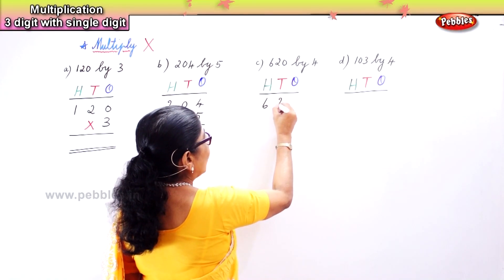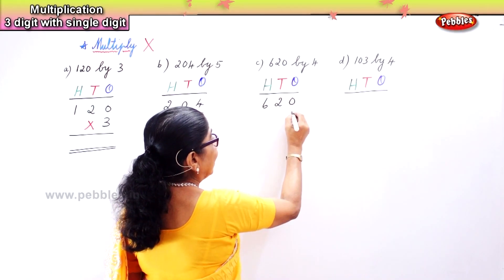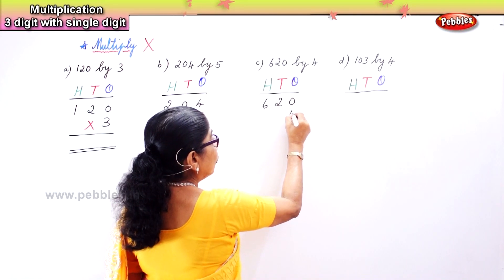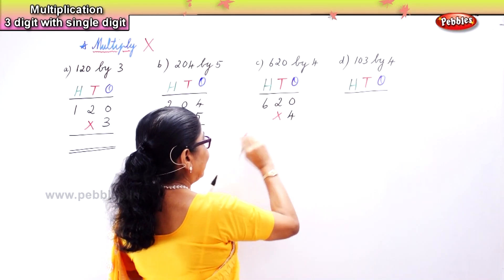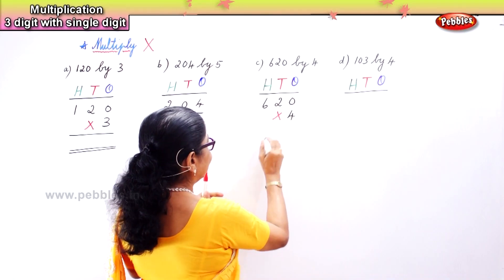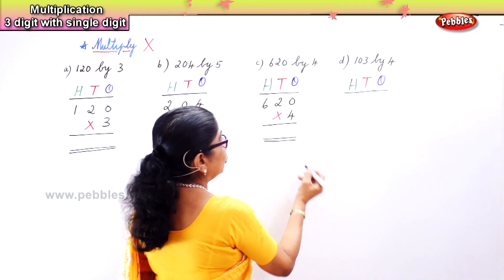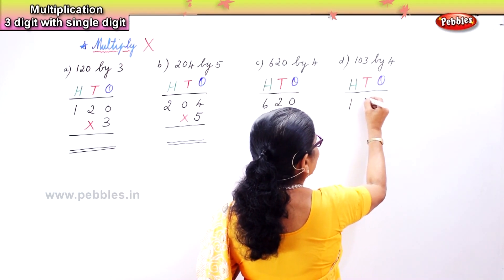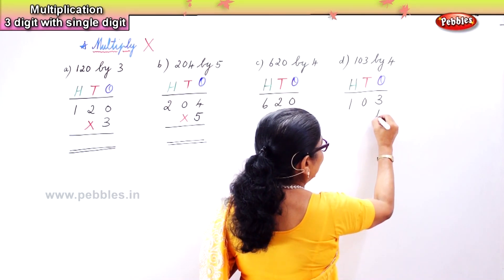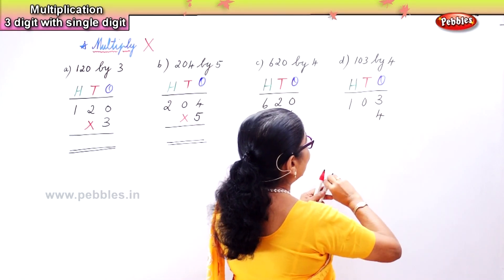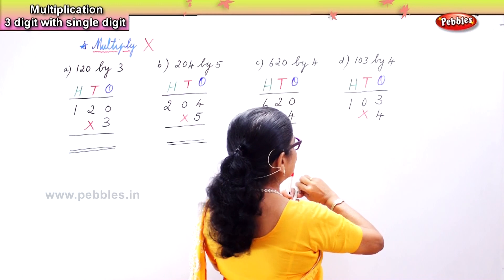Here you have 620 — multiplied by 4. 'By' means multiply — the sign. You put it down. And here you have 103 multiplied by 4. The sign 'by' means multiply.